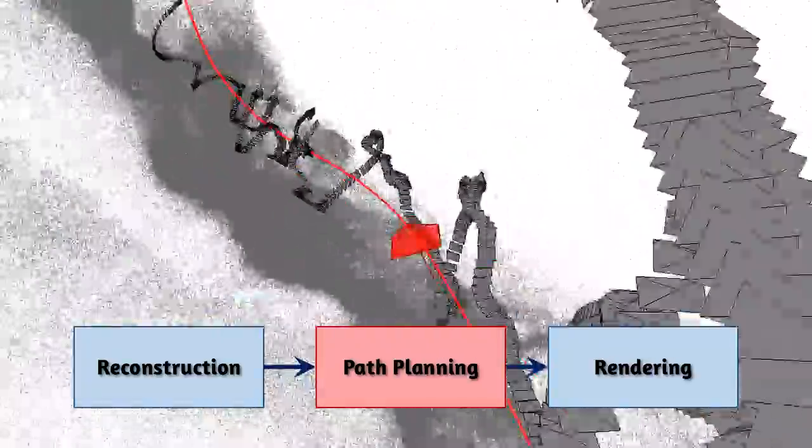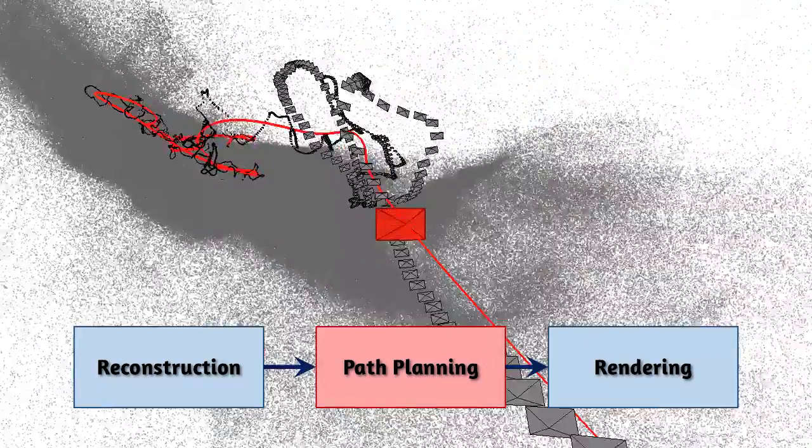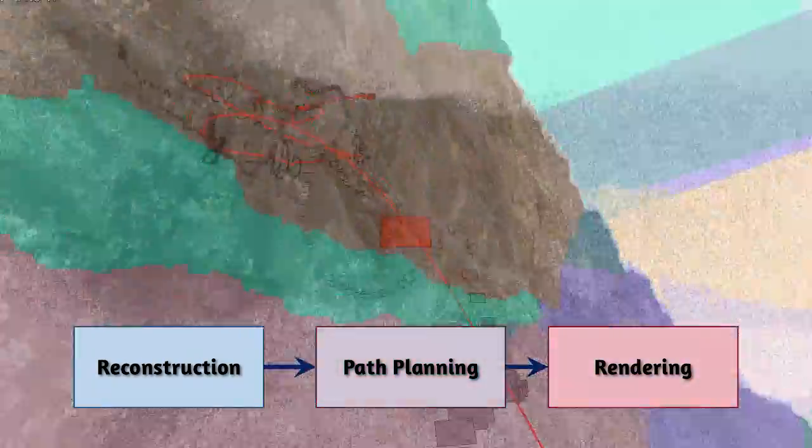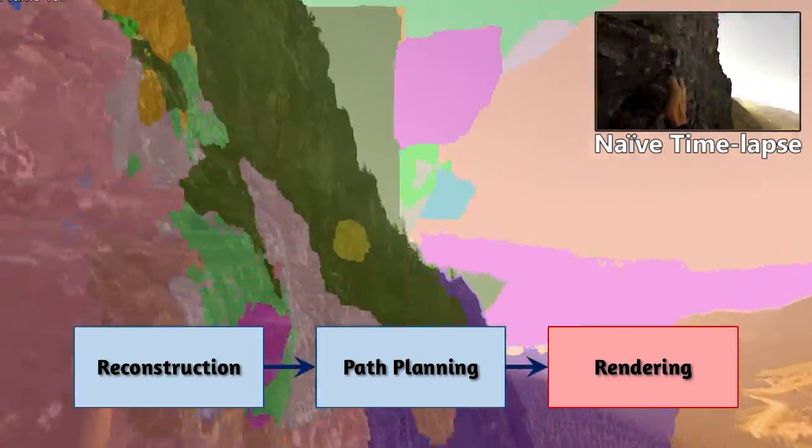Previous methods employ relatively simple path-smoothing algorithms that cannot achieve acceptable results. Finally, in the third stage, we render the output hyperlapse video.